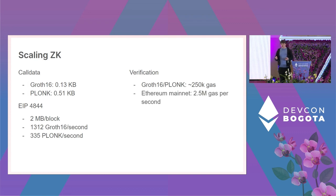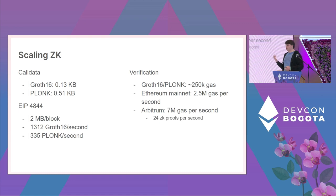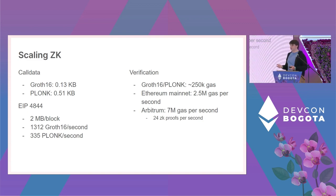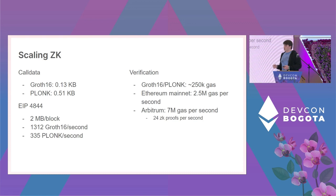Ethereum mainnet currently does about 2.5 million gas per second — 30 million gas every 12 seconds — so we can verify about 10 proofs per second. On Arbitrum, at 7 million gas per second, that's 24 proofs per second. The obvious bottleneck is on-chain verification cost. These numbers are also extreme upper bounds, assuming entire blocks are filled with ZK proof verification.